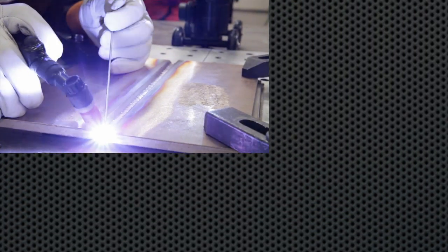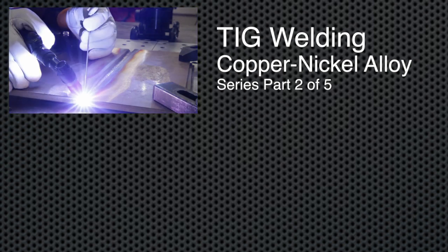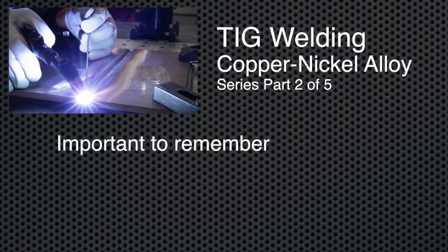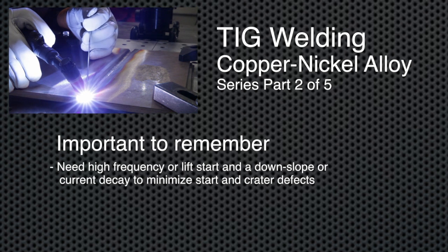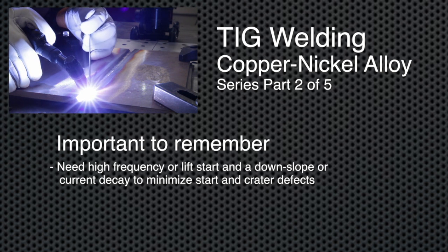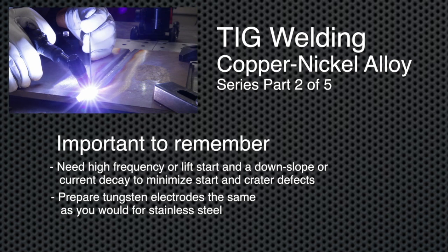The basic guidelines for TIG welding are covered in the copper-nickel alloy TIG welding video and are applicable to pipe welding. Some important points to remember are the need for high frequency or a lift start and a downslope or current decay to minimize start and crater defects. Prepare tungsten electrodes the same as you would for stainless steel. Use as large a cup size as practical or a gas lens.